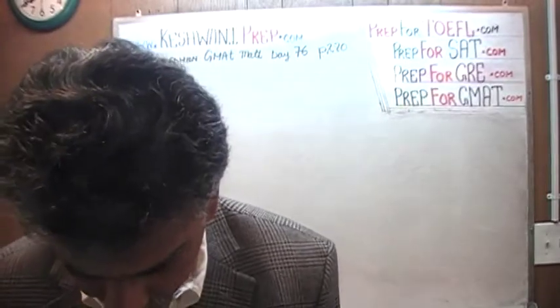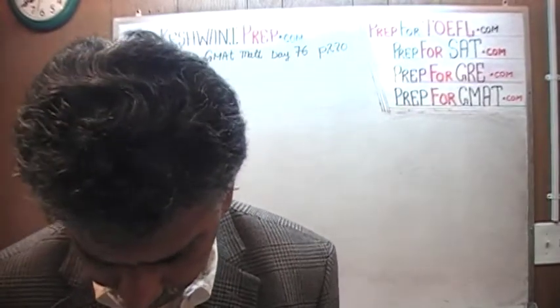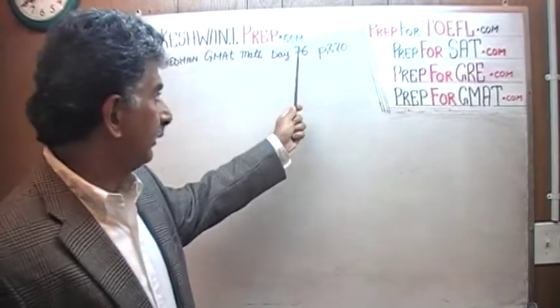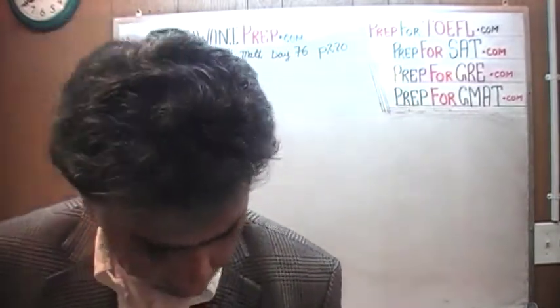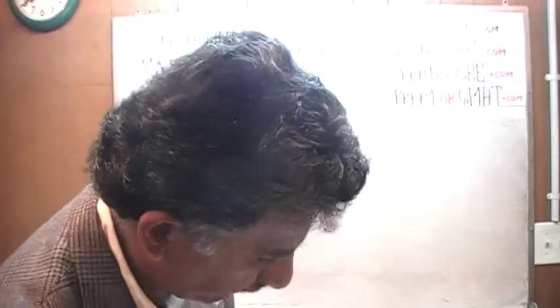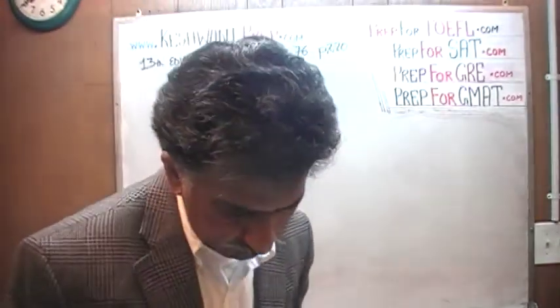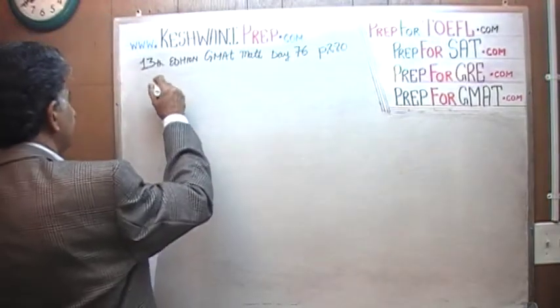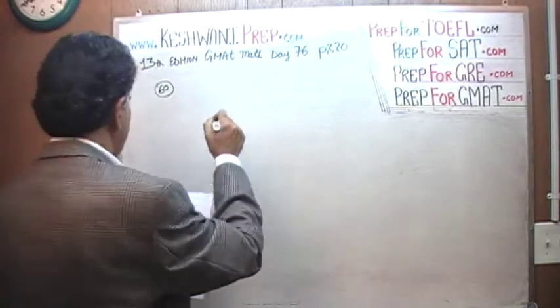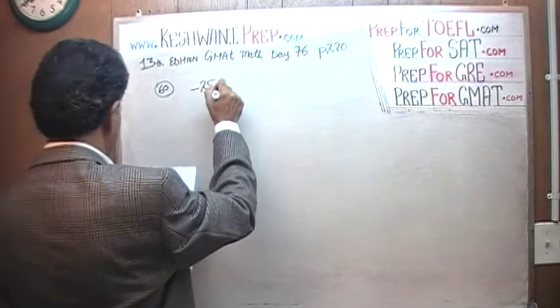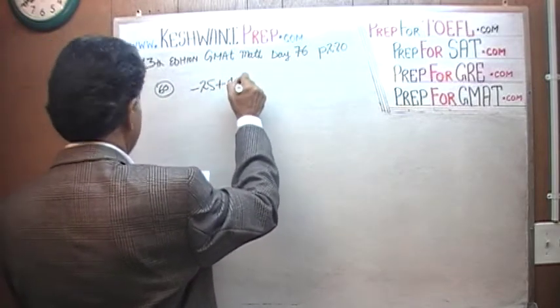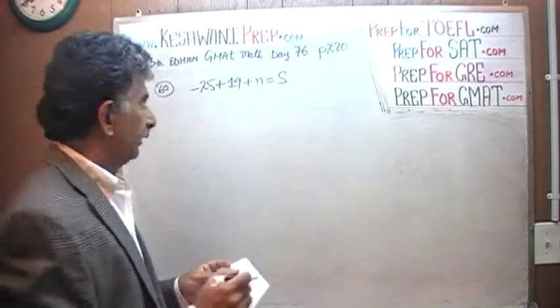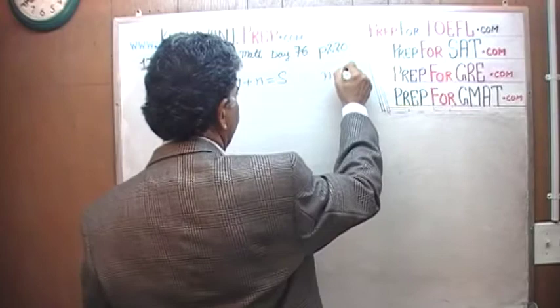The problem that we are about to solve is the one that you will find on page number 280. And today is our lesson number 76, problem number 280 is a data sufficiency problem, problem number 60. We are told that negative 25 plus 19 plus n equals s, and the question simply is, how much is n?